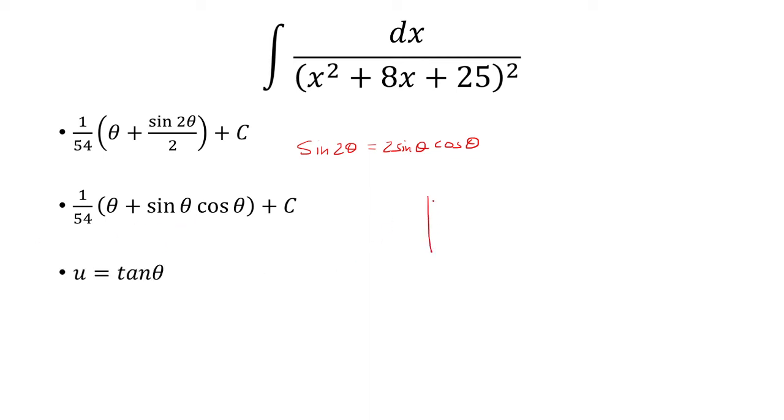So when we did a trig substitution, we let u equal tangent theta. So if we have the angle theta here, tangent is opposite over adjacent. So you can think of u as just u over 1. So that's u over 1. Pythagorean theorem says the hypotenuse is just the square root of u squared plus 1.